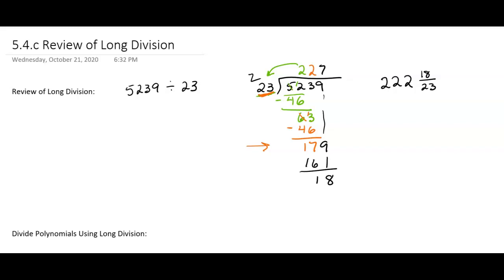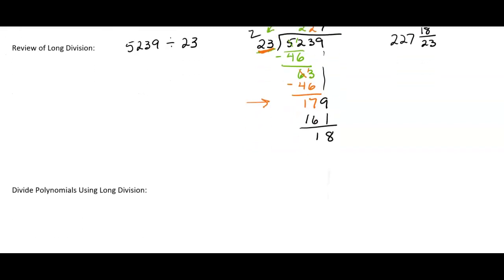Whoops, I wrote that wrong. I put 222, it was supposed to be 227. Okay, something like that, the long division process. Well, we're going to do something similar but with polynomials, and it's actually going to be better, maybe.